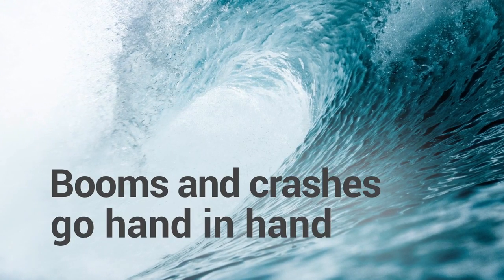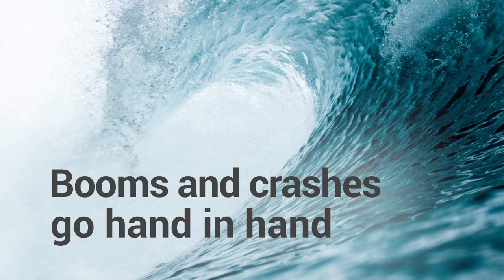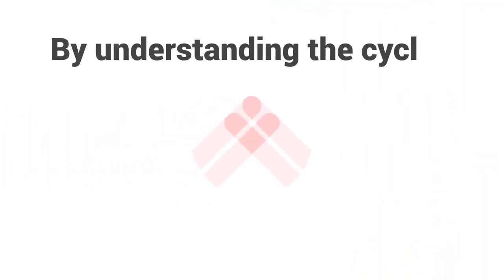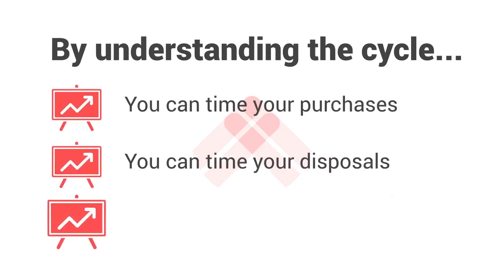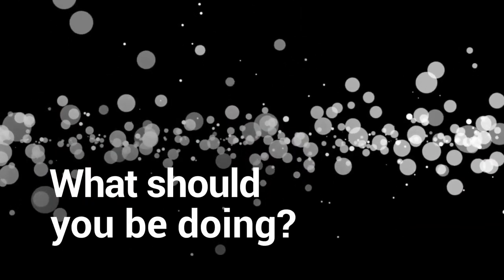But if you zoom in, you'll see that prices don't go up in a nice smooth straight line — you get booms and crashes along the way. By understanding the phases of the cycle, you can be much smarter than just buying property because eventually it'll be worth more. You can time your purchases, time your disposals, and do far better than if you just buy on the basis that prices always go up. Prices will end up higher, but along the way there's a lot that goes on. So let's dig into each phase in more detail — what drives them, why they happen, and what you should be doing at each point.